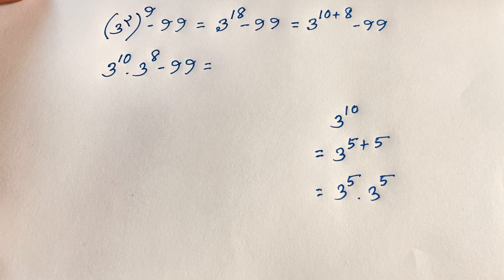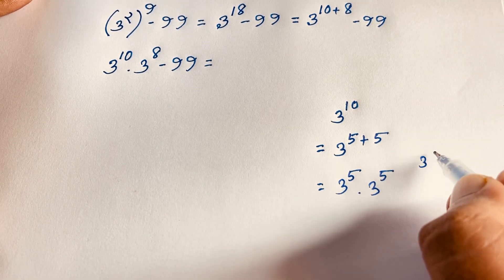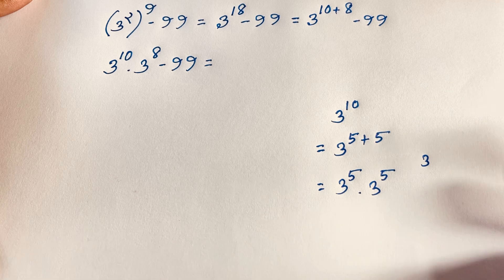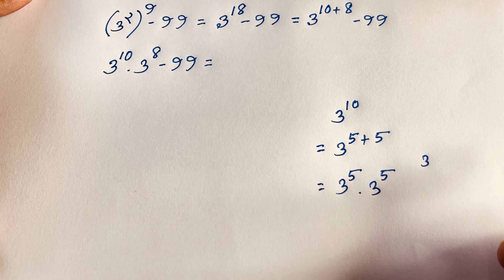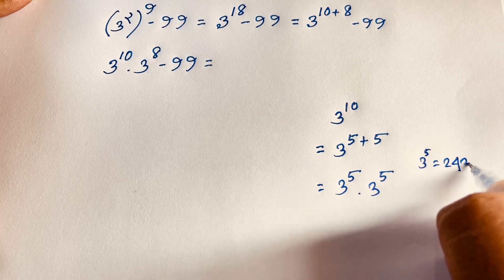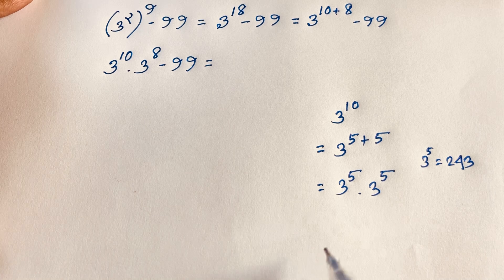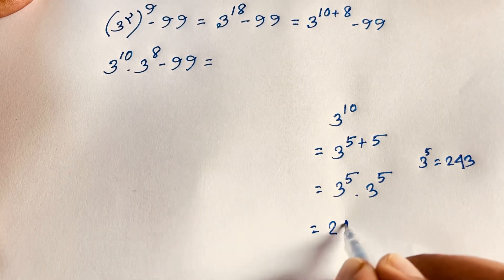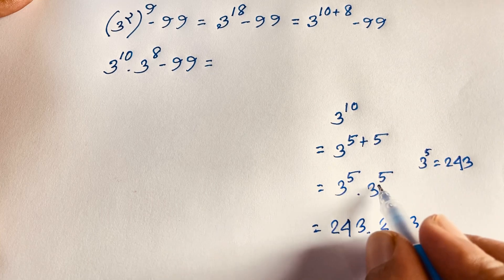Now, 3 to the power 5 is equal to what? We know that 3 to the power 1 is 3, 3 to the power 2 is 9, 3 to the power 3 is 27, 3 to the power 4 is 81. So 3 to the power 5 is 5 times 81, which equals 243. Therefore 3 to the power 10 equals 243 times 243.